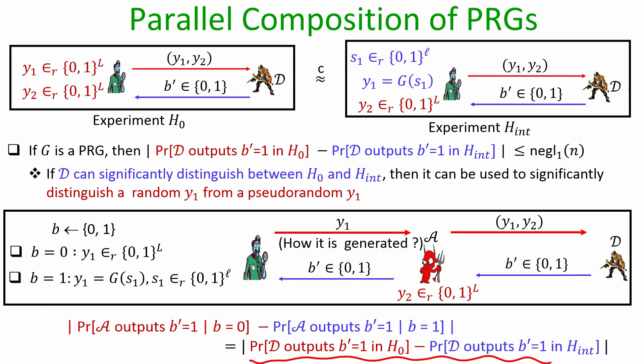If the existing distinguisher D can significantly distinguish H0 from H_int, then algorithm A can significantly distinguish a pseudo random sample from a uniformly random sample — but that contradicts the assumption that the existing algorithm G is a secure PRG. Since G is a secure PRG, the distinguishing advantage of A is upper bounded by a negligible probability, which further implies the distinguishing advantage of D is also upper bounded by a negligible probability. That proves our first claim.